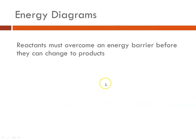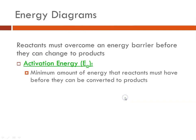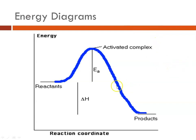We think about an energy barrier that reactants must overcome in order to turn into products — that is the activation energy, the minimum amount of energy that reactants must have before they can be converted to products. On an energy diagram, the y-axis is energy and the x-axis is the reaction coordinate, which can be thought of as time. The reactants climb the energy hill to reach the activated complex. E sub A is the activation energy — the difference in energy between the reactants and the activated complex.